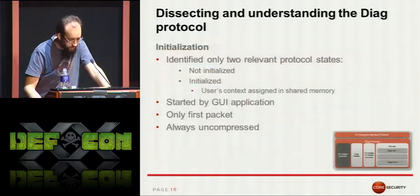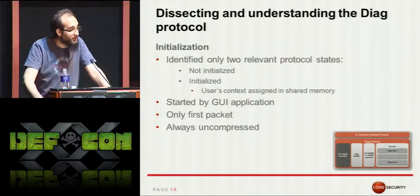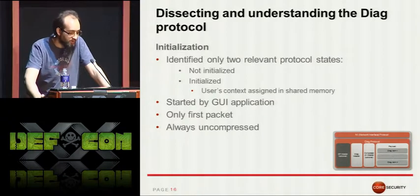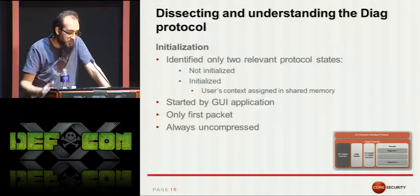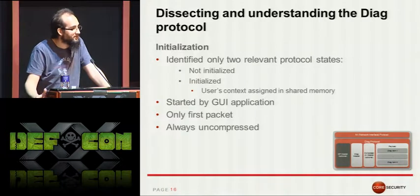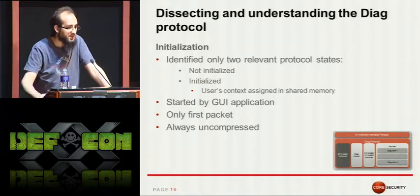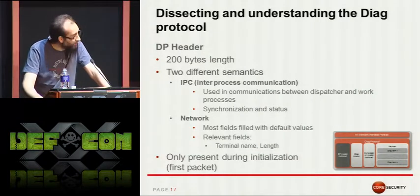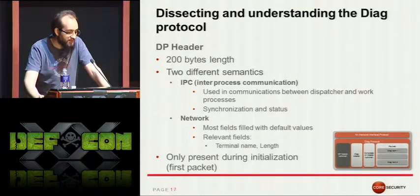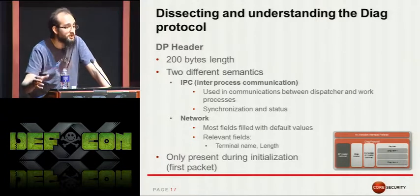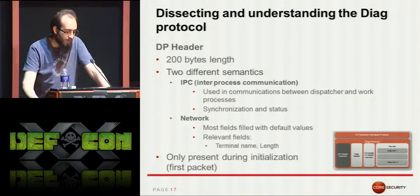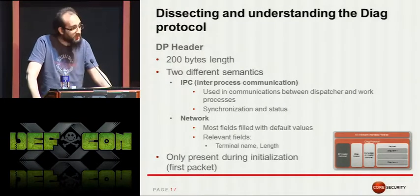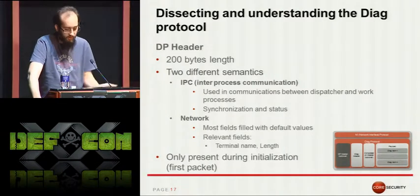The DIAG protocol is composed by different headers and the payload itself. There's one optional header used only during initialization — the DP header. Then there's the DIAG header, which carries information about the communication; the compression header, which is also optional and only present when the payload is compressed; and the payload itself, which carries all the relevant information. The DP header is a 200-byte header used for inter-process communications between the dispatcher service and the work processes. From a network perspective, most fields are filled with default values, with only two relevant fields: a terminal name and a length field.